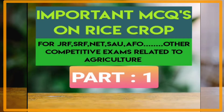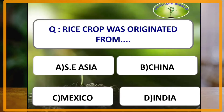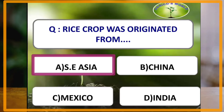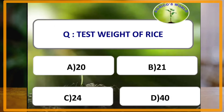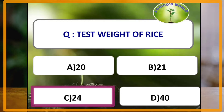The first question: rice crop was originated from — rice crop originated from Southeast Asia. The test weight of rice is the weight of a thousand seeds for small-seeded varieties, and the hundred seed weight for bold seeds. The test weight of rice is 24 to 25 grams, and the test weight of basmati rice is 21 grams.